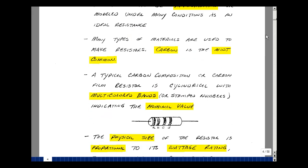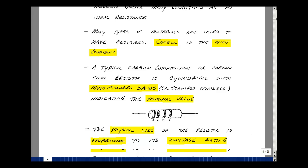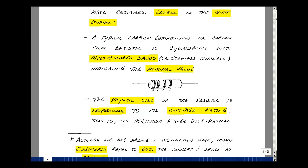A typical carbon composition or carbon film resistor is usually cylindrical in nature and has multi-colored bands painted on it, or perhaps a value stamped on it. This is indicating the nominal or typical value.